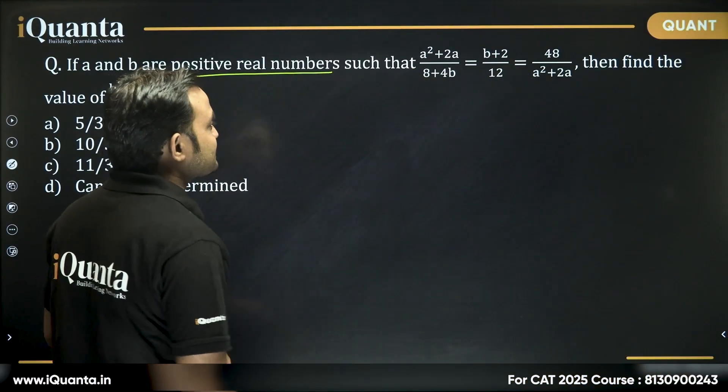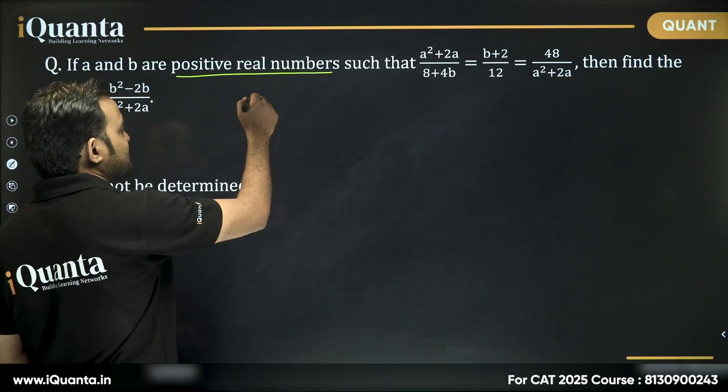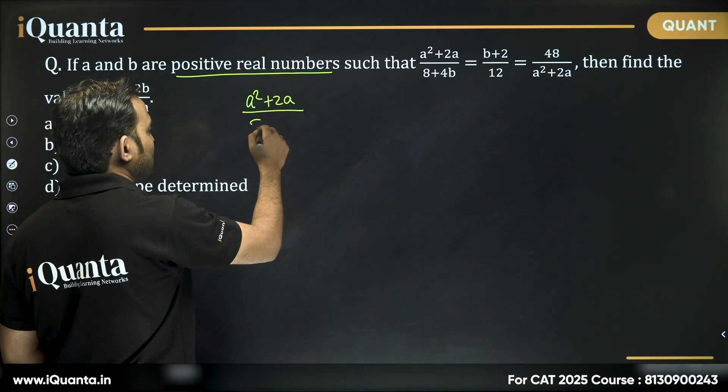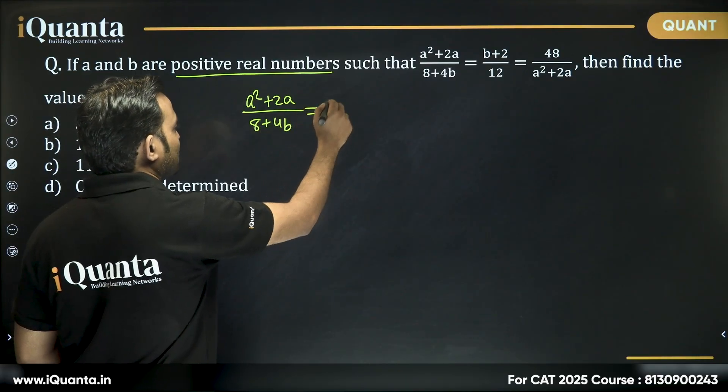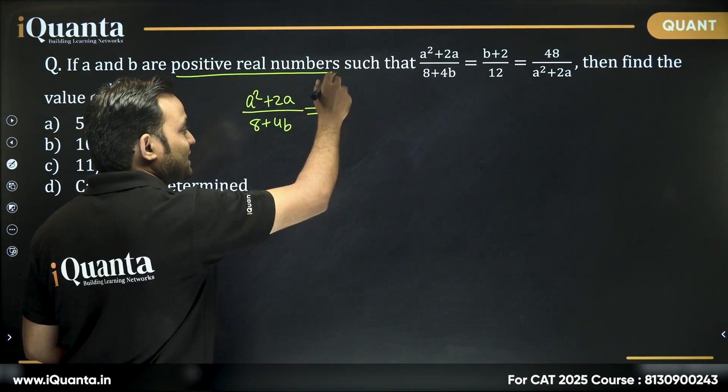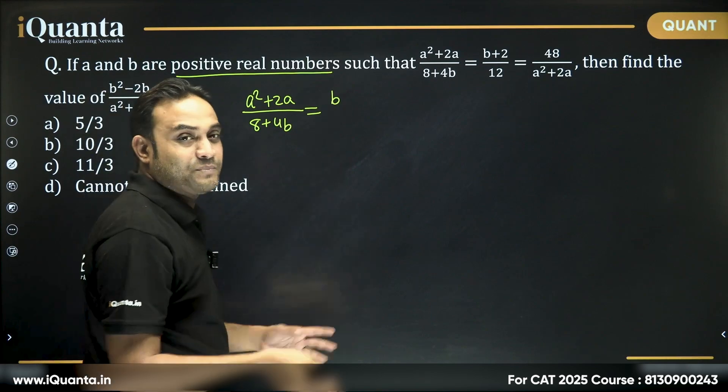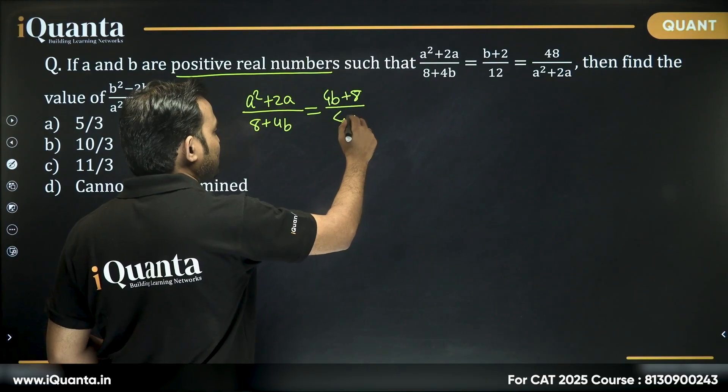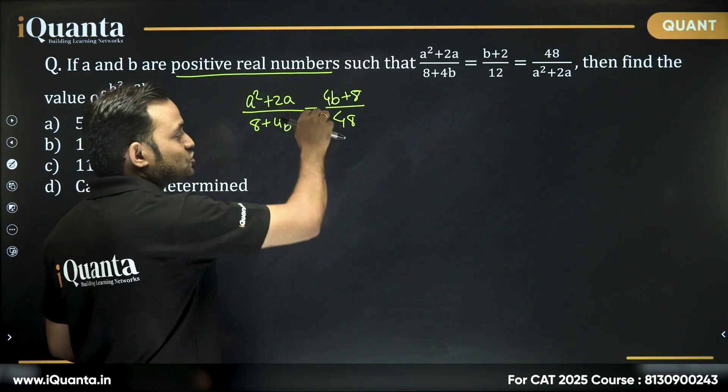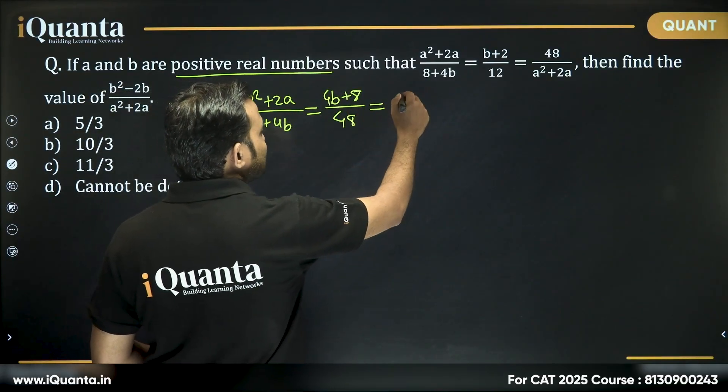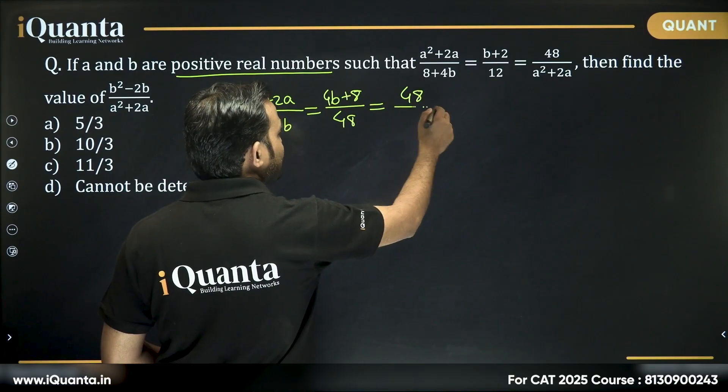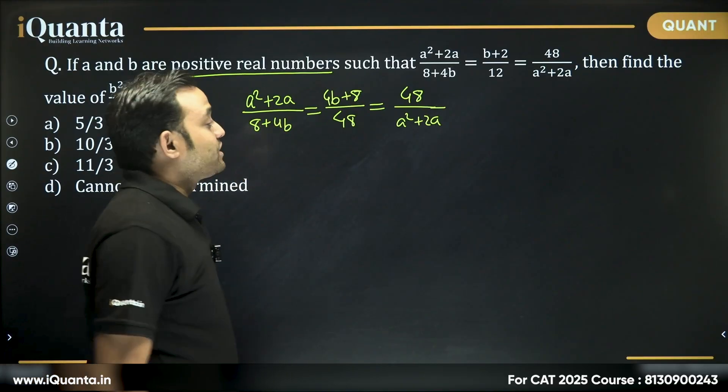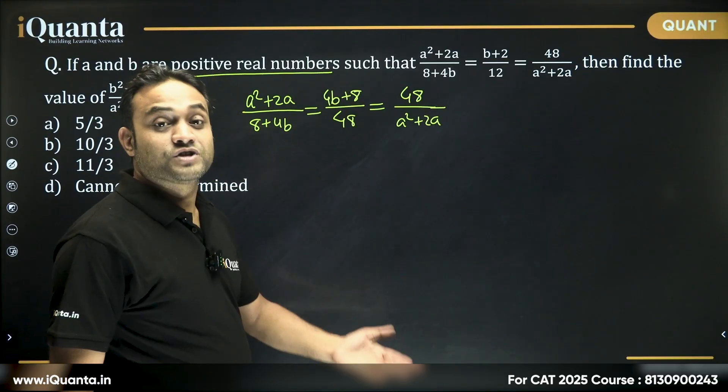So what we can say, can I write this ratio as a² + 2a upon 8 + 4b is equal to, now I can multiply the numerator and denominator by 4, this will become 4b + 8 divided by 48 just because these two will become equal and then again it will be 48 upon a² + 2a. Right, so now how to proceed further.